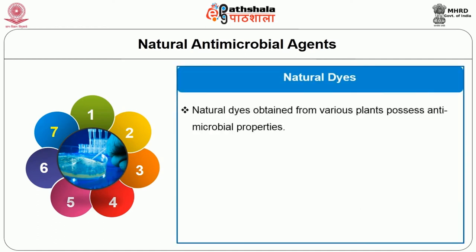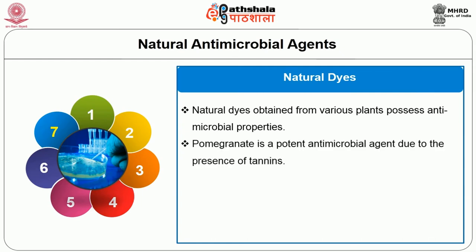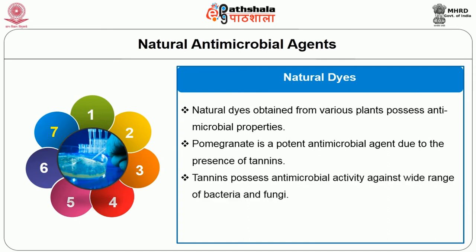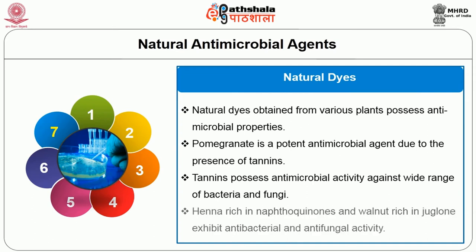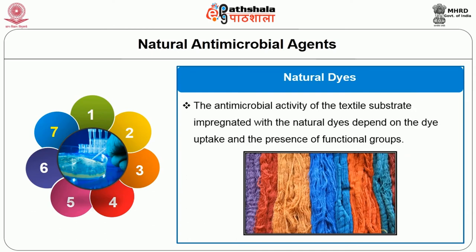Natural dyes obtained from various plants possess antimicrobial properties. Pomegranate is a potent antimicrobial agent due to the presence of tannins. Tannins possess antimicrobial activity against a wide range of bacteria and fungi. Henna, rich in naphthoquinones, and walnut, rich in juglone, exhibit antibacterial and antifungal activity. The antimicrobial activity of textile substrate impregnated with natural dyes depends on the dye uptake and the presence of functional groups.